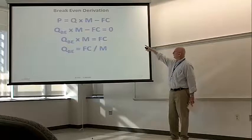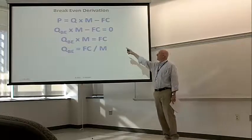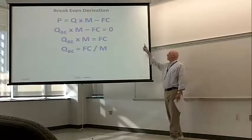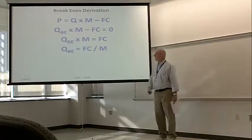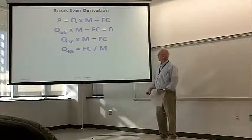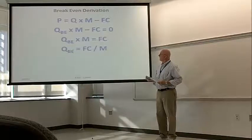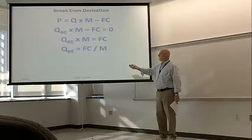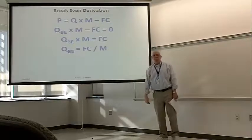If you set that profit equal to zero, now we have got the breakeven quantity times the margin minus the fixed cost. Take fixed costs over to the other side or add fixed costs to both sides, depending on whether you went to a public or a private school and when. Then simply divide both sides by the margin and quantity breakeven is equal to the fixed cost divided by the margin.